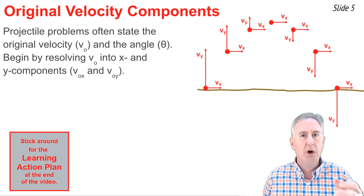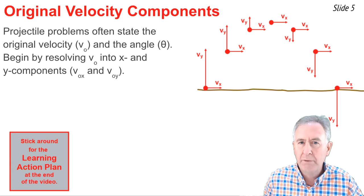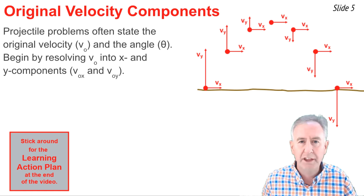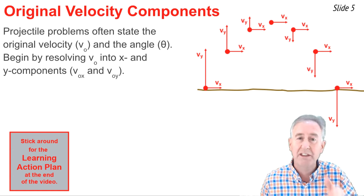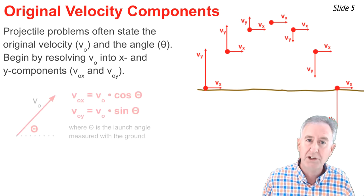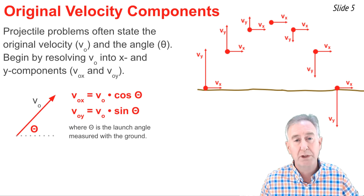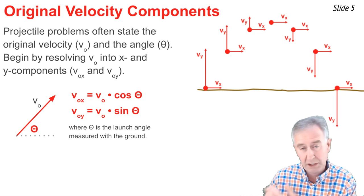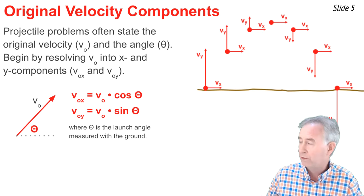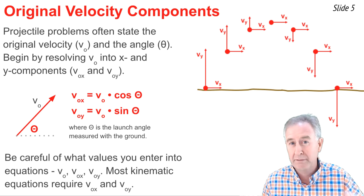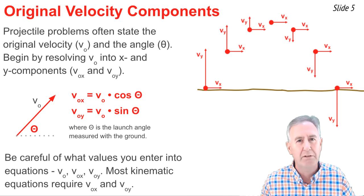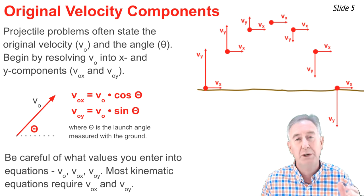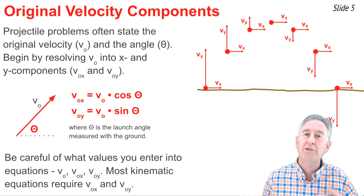Most projectile problems state the VO value and the angle theta. But the equations have no VO or theta in them. So as a first step, you take VO and theta and find the horizontal and vertical components — VOx and VOy — using trigonometric functions. The formulas are: VOx equals VO times cosine of theta, and VOy equals VO times sine of theta, where theta is measured from the horizontal. At this point you have three velocities — VO, VOx, and VOy — so always check the subscript carefully. Typically, you don't need VO once you've used trig to find the components.